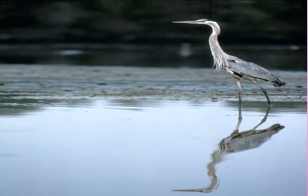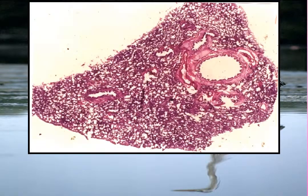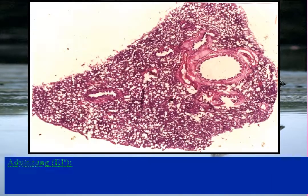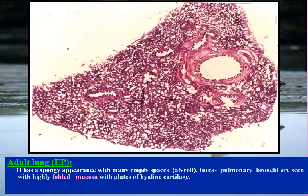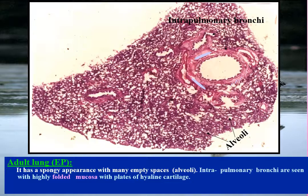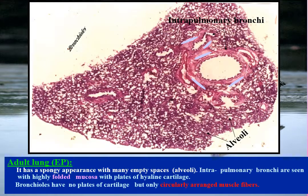Adult lung examined by eyepiece has a spongy appearance with many empty spaces representing alveoli. Intrapulmonary bronchi are seen with highly folded mucosa and plates of hyaline cartilage. Bronchioles, on the other hand, have no plates of cartilage but only circularly arranged smooth muscle fibers.